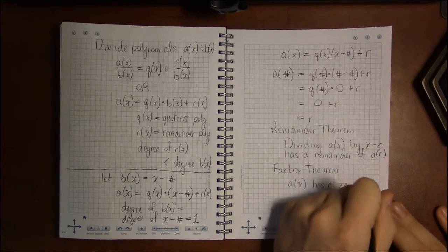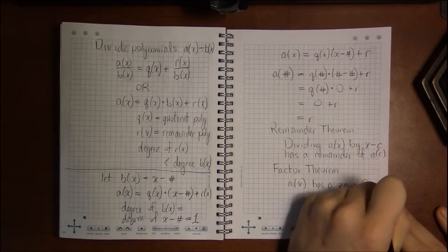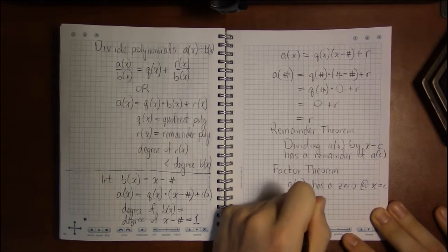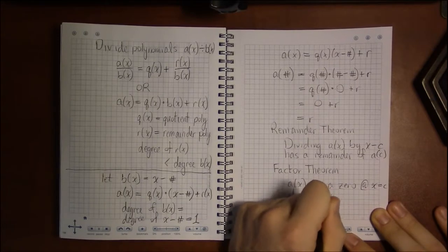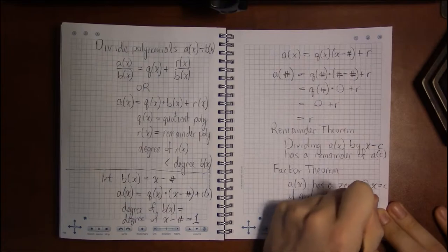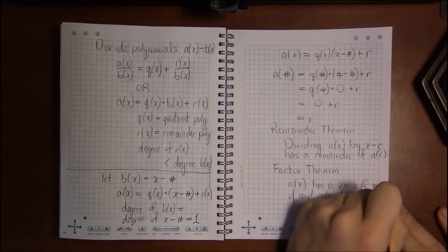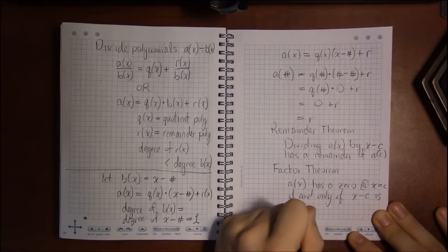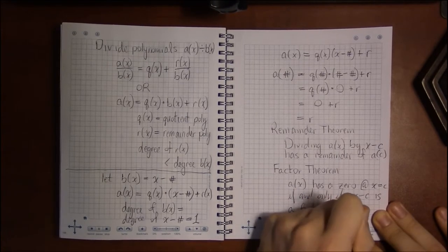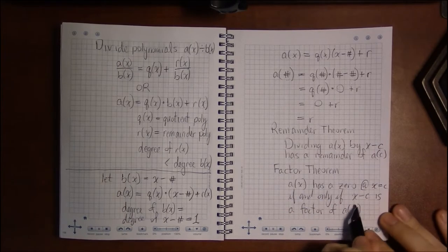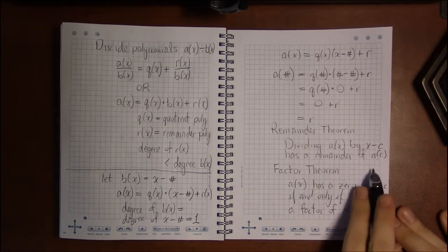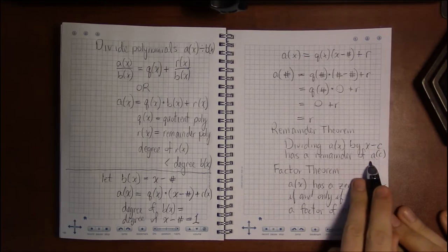X minus C is a factor of A of X. If X minus C, when you divide X minus C into A of X, you get a zero remainder.